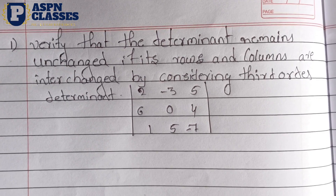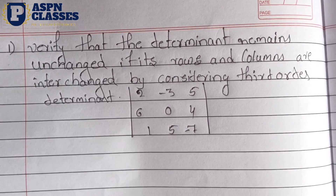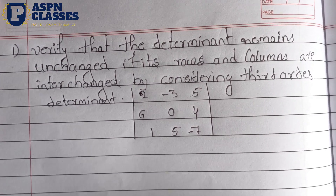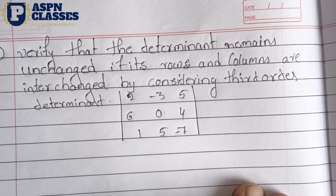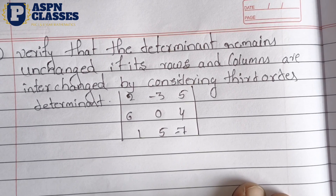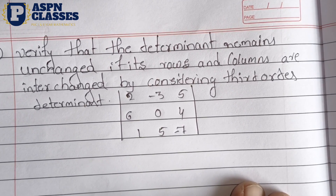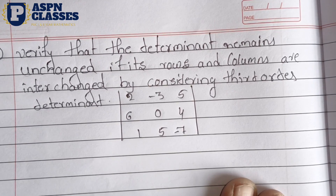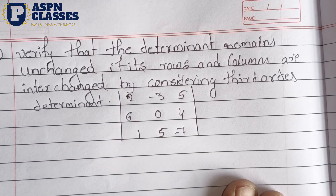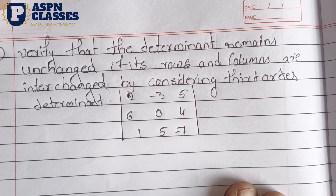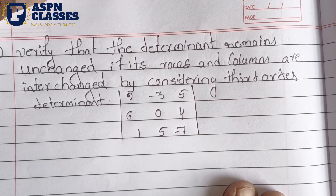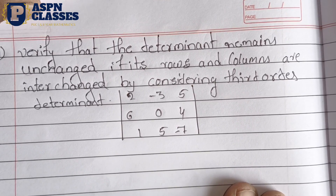Hi students, welcome to the ASPEN classes. In the Determinant chapter, we have a discussion about 3-month questions. This is the first question — every question is asked about these types of questions.